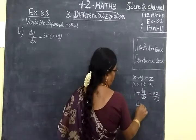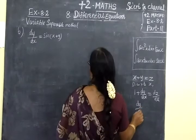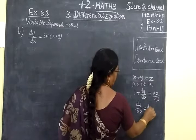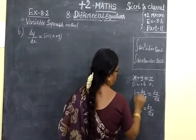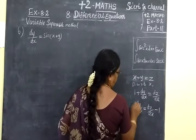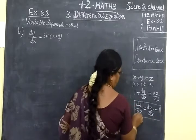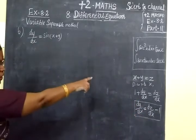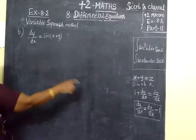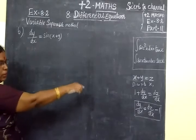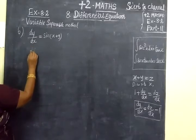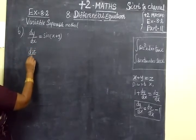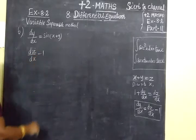So dy by dx equals dz by dx. This is the substitute formula. Instead of dy by dx, we are writing dz by dx minus 1. So dy by dx equal to dz by dx minus 1.